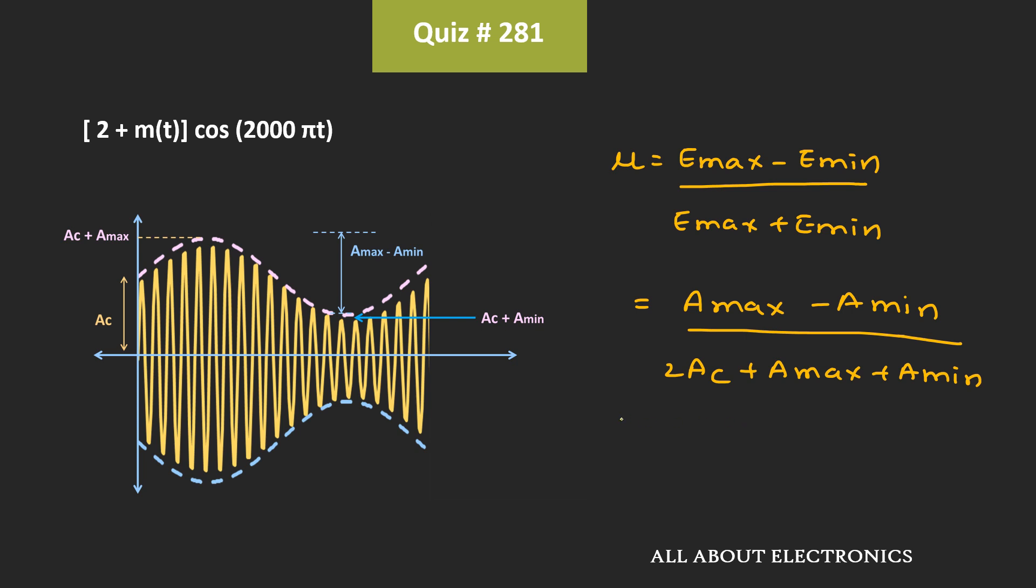So in this case, the maximum amplitude of the message signal is equal to 3V, while the minimum amplitude is -1V. That means this Amax minus Amin will be equal to 3 minus (-1), which is 4V. Similarly, in the denominator, we will have 2 times 2V plus 3V minus 1V. That is equal to 4V divided by 6V, that is equal to 2 by 3.